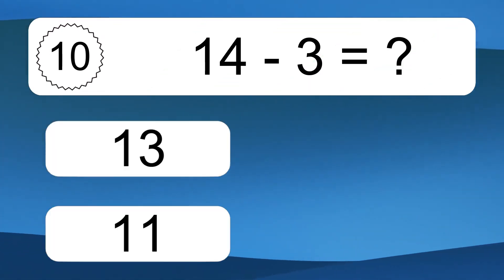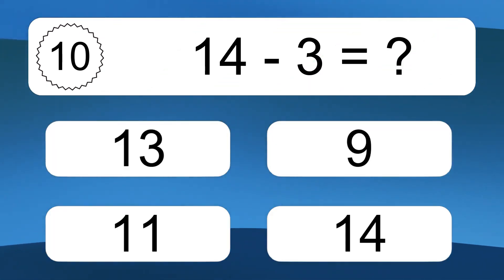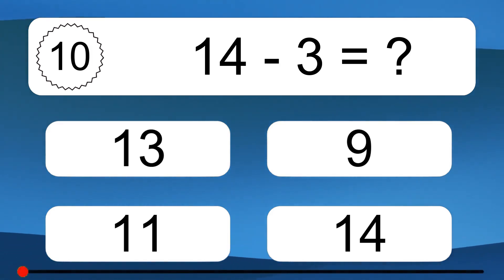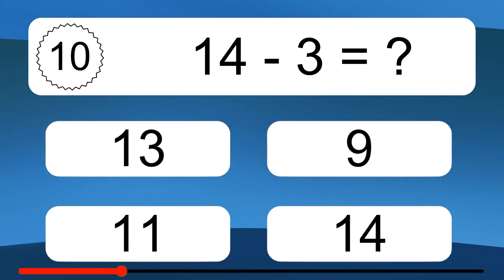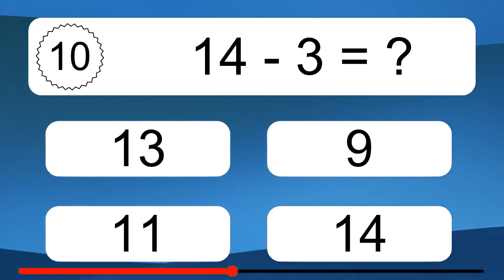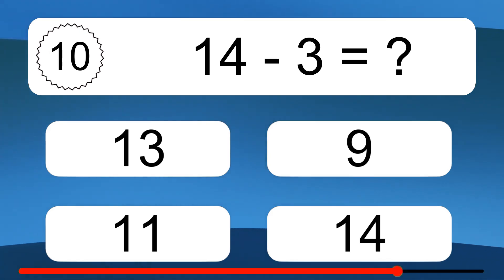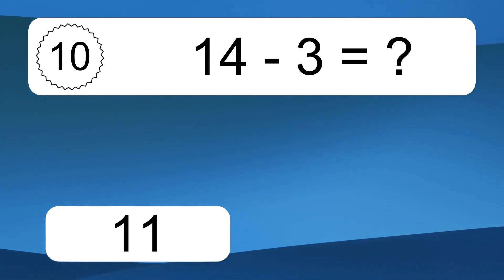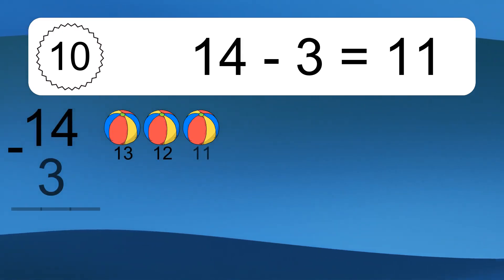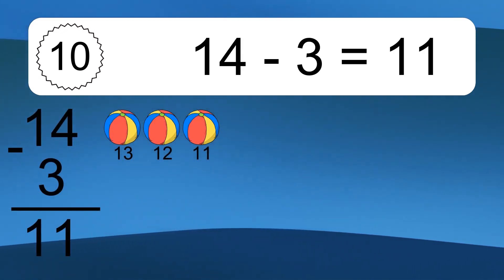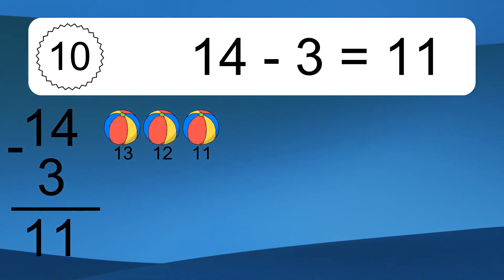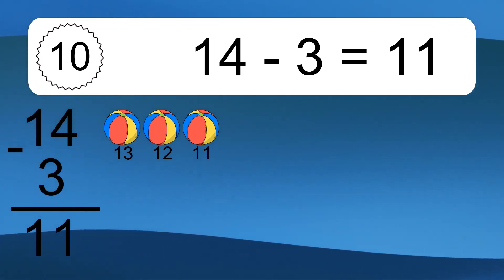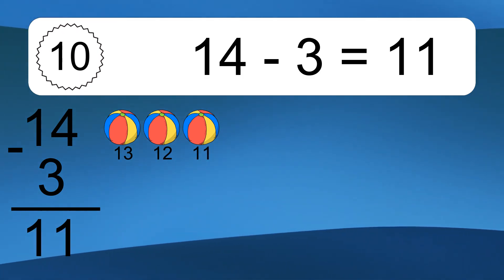14 minus 3 equals what? 14 minus 3 equals 11. Let's count it: 13, 12, 11.